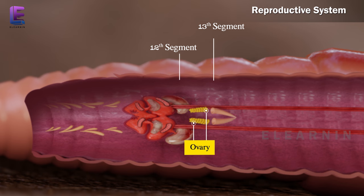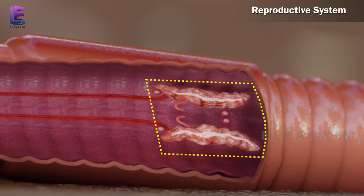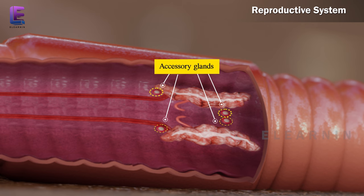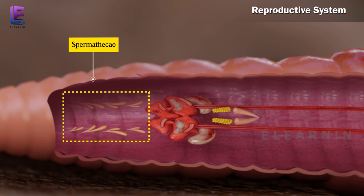One pair of ovaries is attached at the intersegmental septum of the 12th and 13th segments. Vasa differentia open to the exterior by a pair of male genital pores on the ventrolateral side of the 18th segment. Two pairs of accessory glands are present, one pair each in the 17th and 19th segments. Four pairs of spermathecae are present on the 6th to 9th segments.